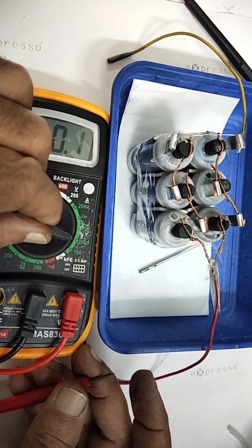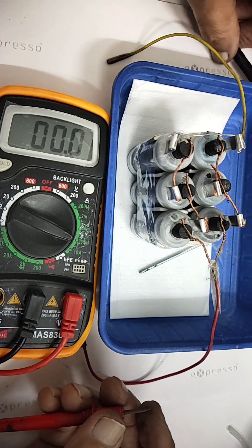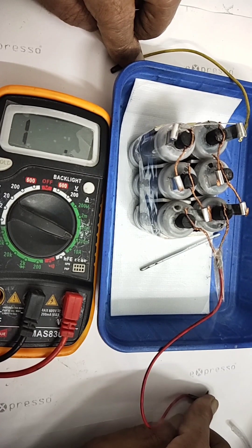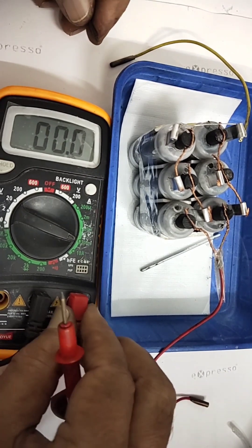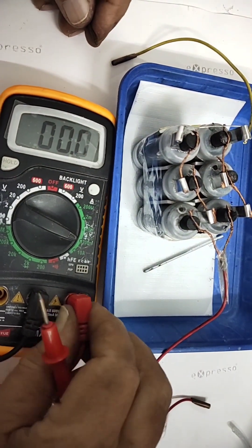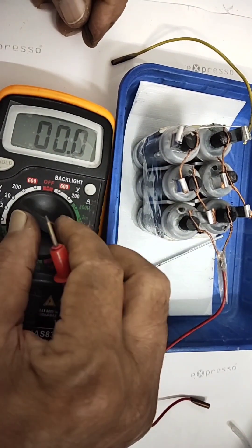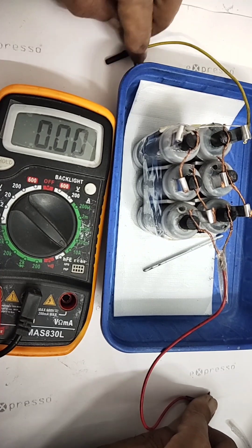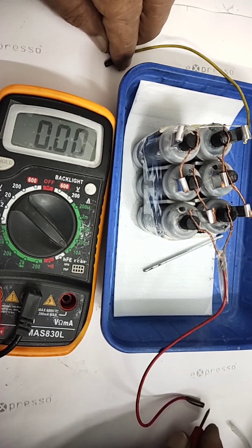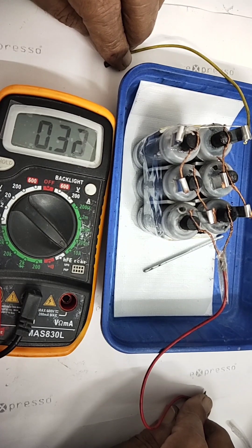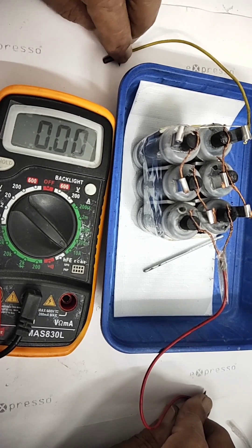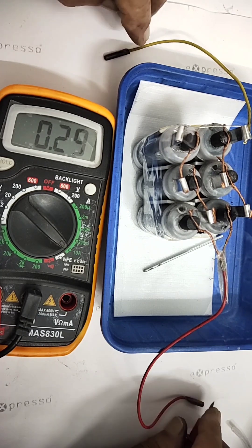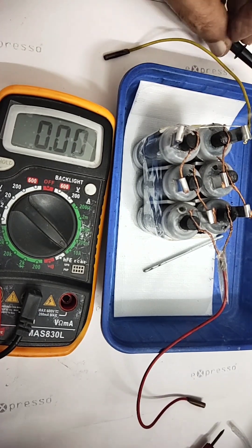Then we will see what is the amperage it is able to give out. I have put in 250 milliamperes reading. You can see the reading above 250 milliamperes. I am going to change to 10 amps range. Nearly 400 milliamperes it is able to give at short. So 300 to 400 milliamperes output is there.